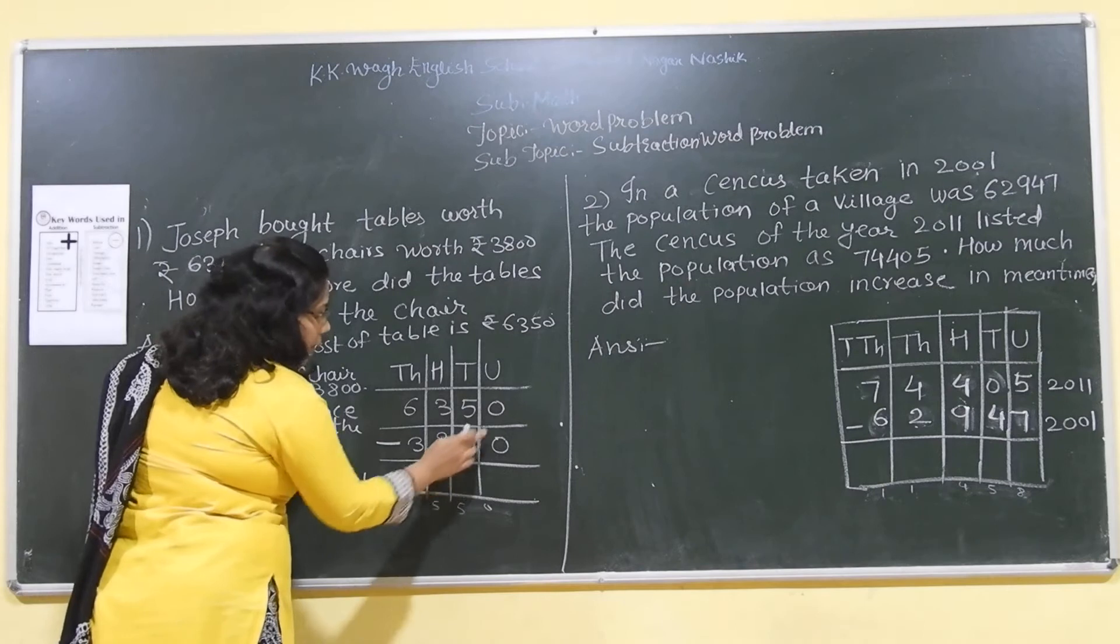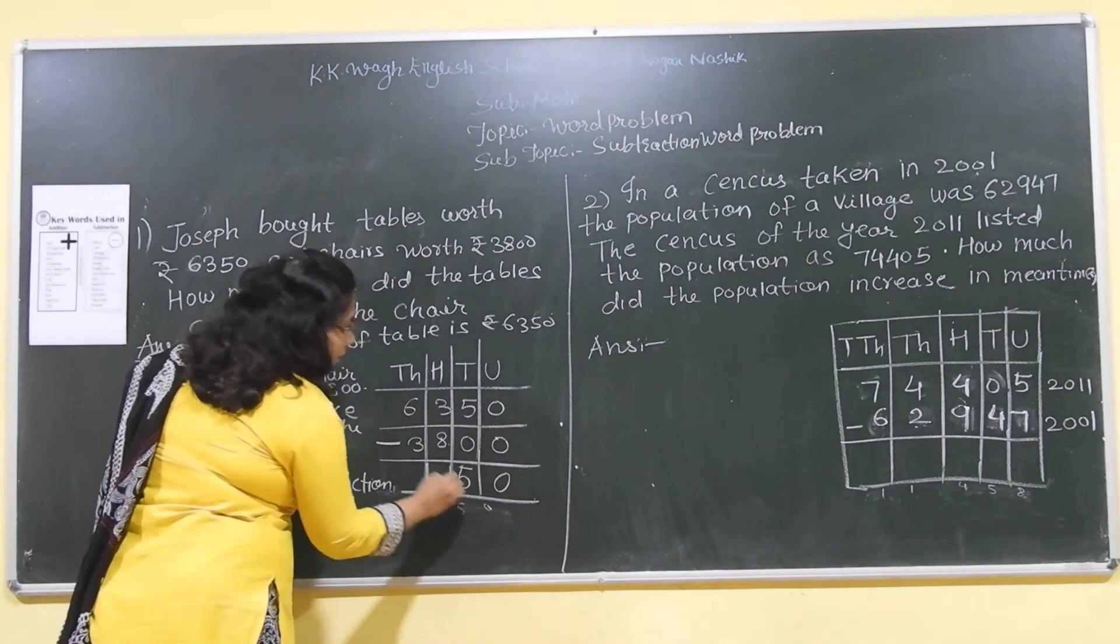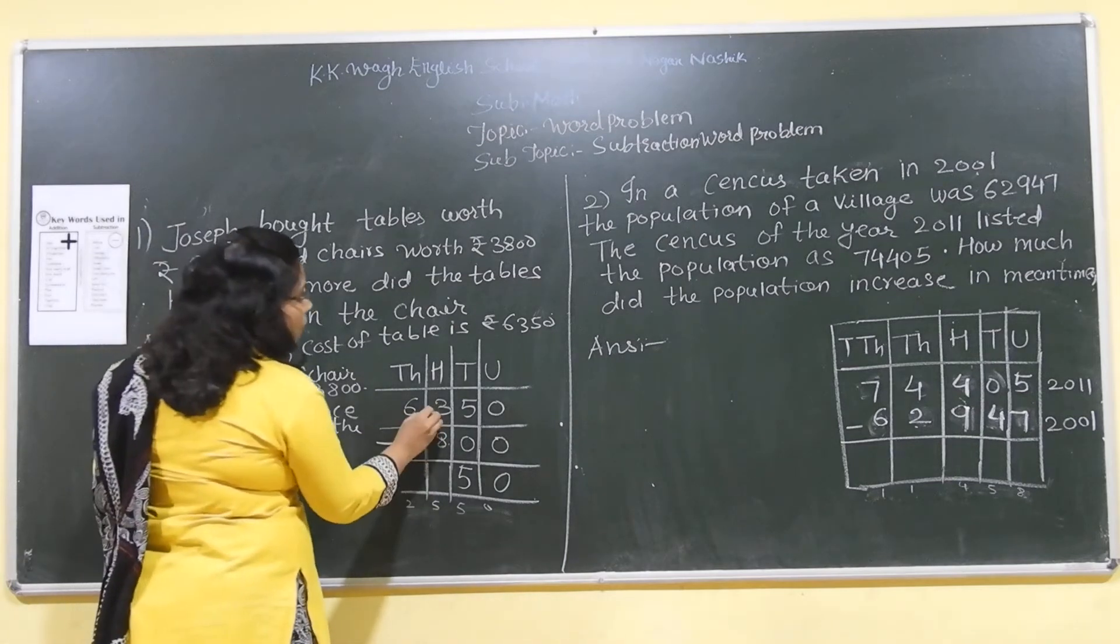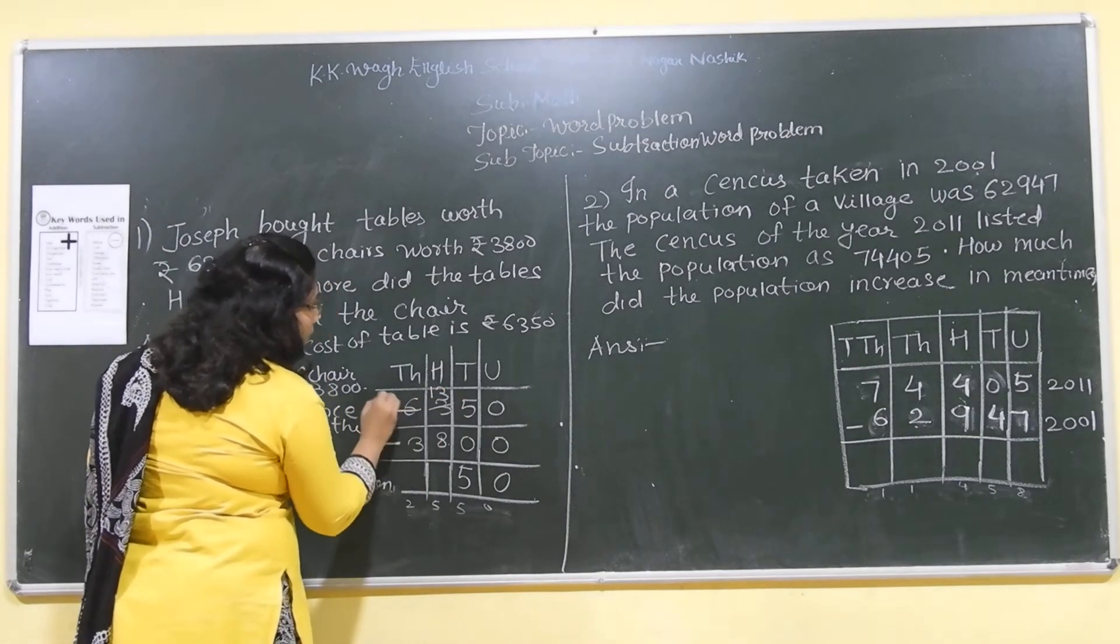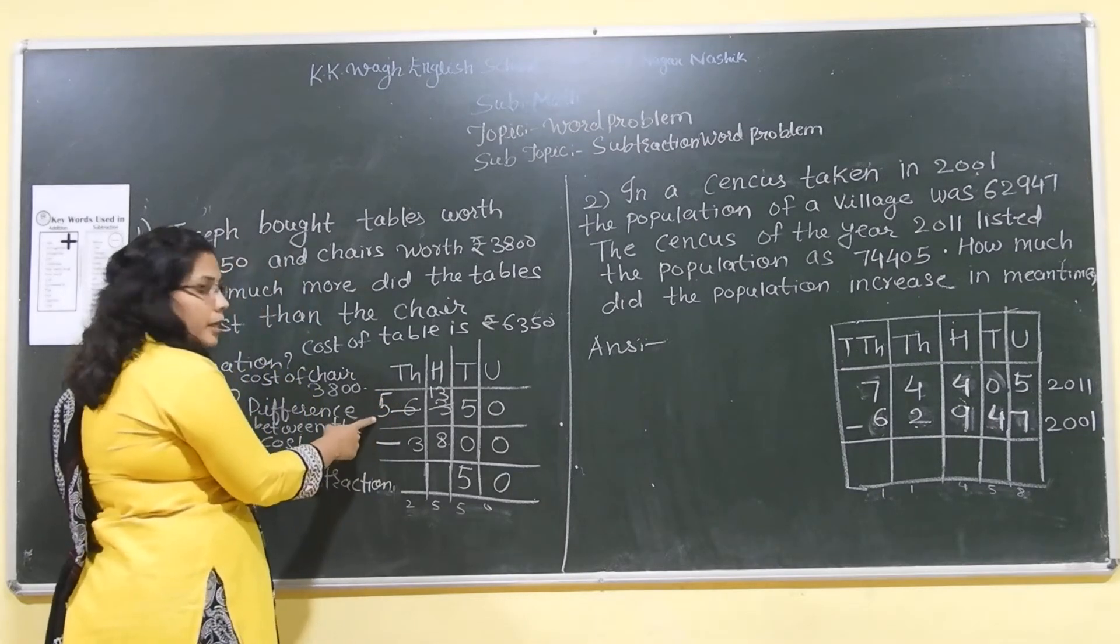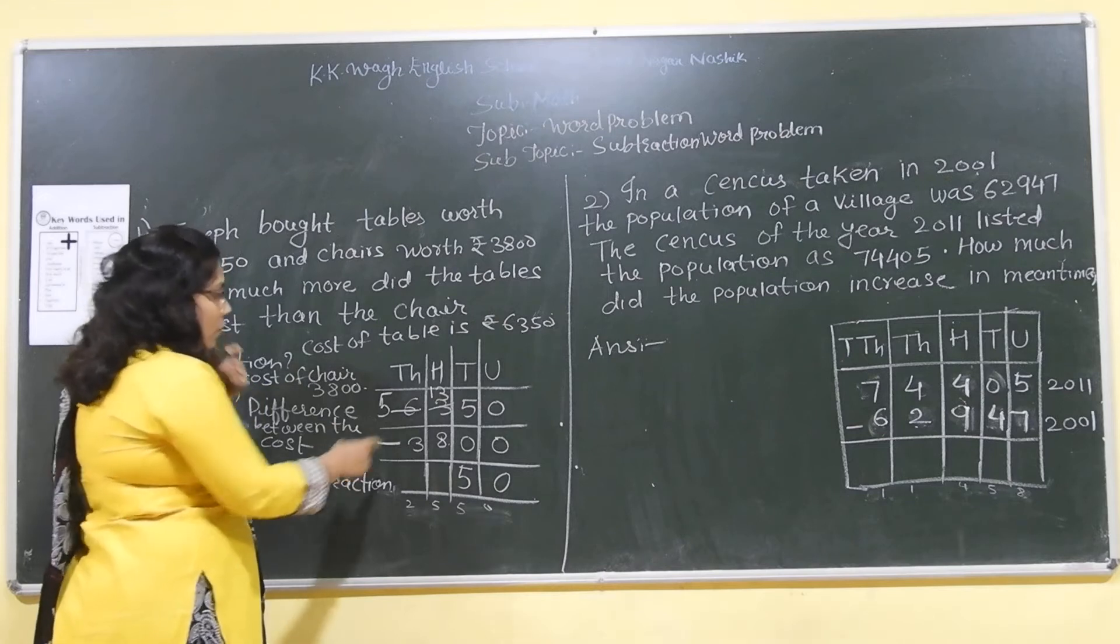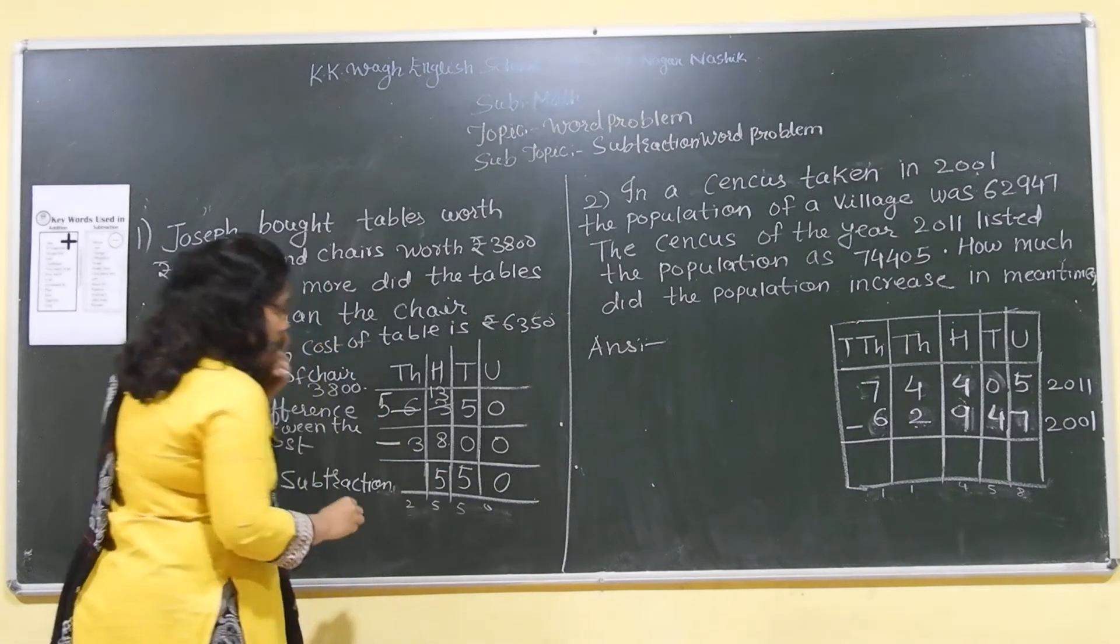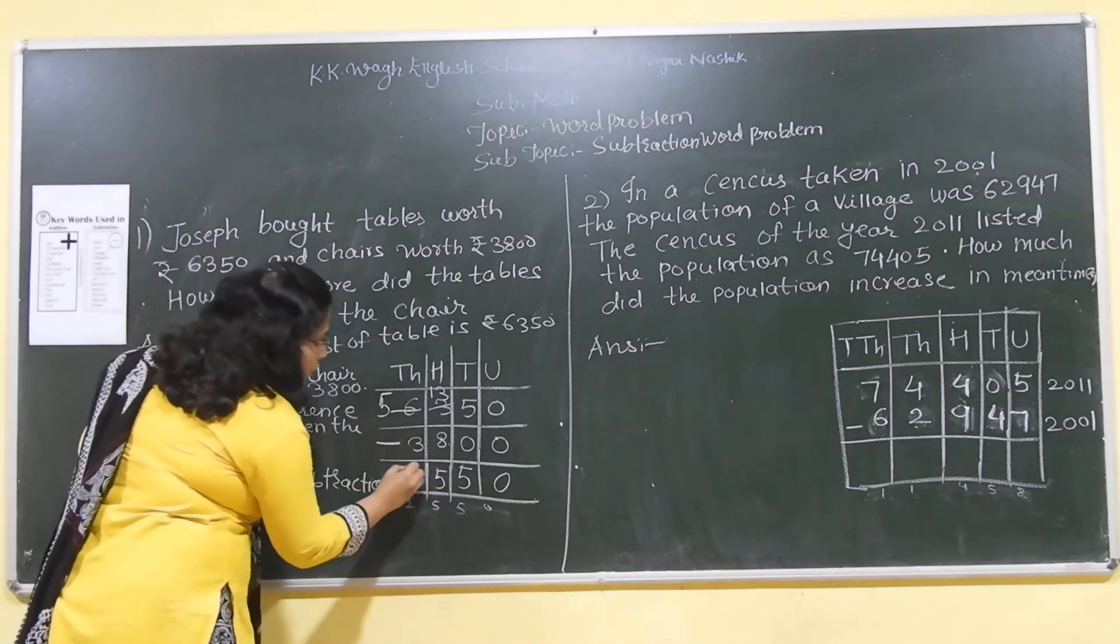We will subtract it 0 minus 0 is 0, 5 minus 0 is 5. Here again 3 minus 8. We can't subtract 8 from 3, so we will make it here 13 and here we will borrow 1 from 6. So, it will become 1 less, that is 5. So, 13 minus 8 is 5 again and 5 minus 3 is equal to 2.